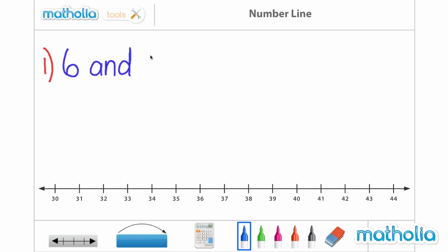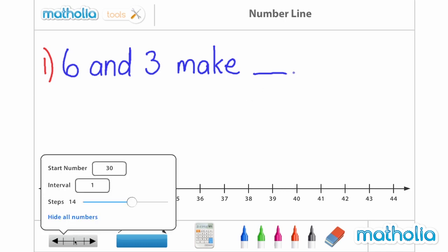Number line variables include the starting number, interval, and number of steps. You can also choose to show or hide the numbers.